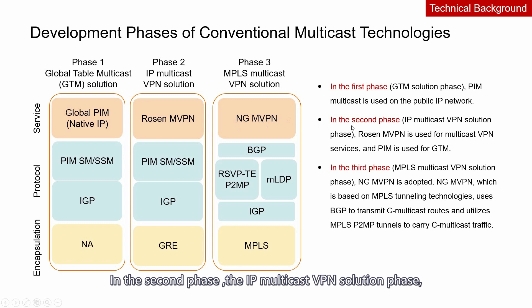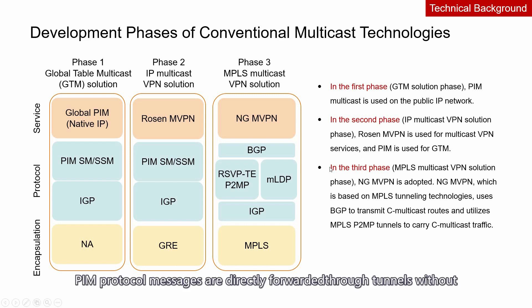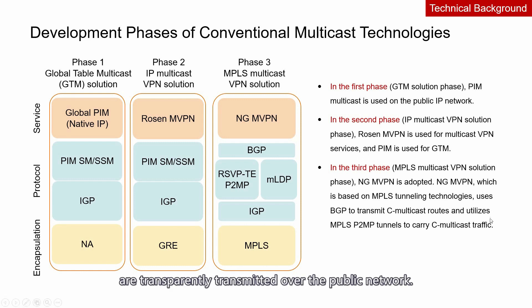In the second phase, the IP multicast VPN solution phase, Rosen MVPN is used for multicast VPN services. PIM is used for GTM. PIM protocol messages are directly forwarded through the tunnel without being processed by BGP extension, and all VPN protocol and data packets are transparently transmitted over the public network.